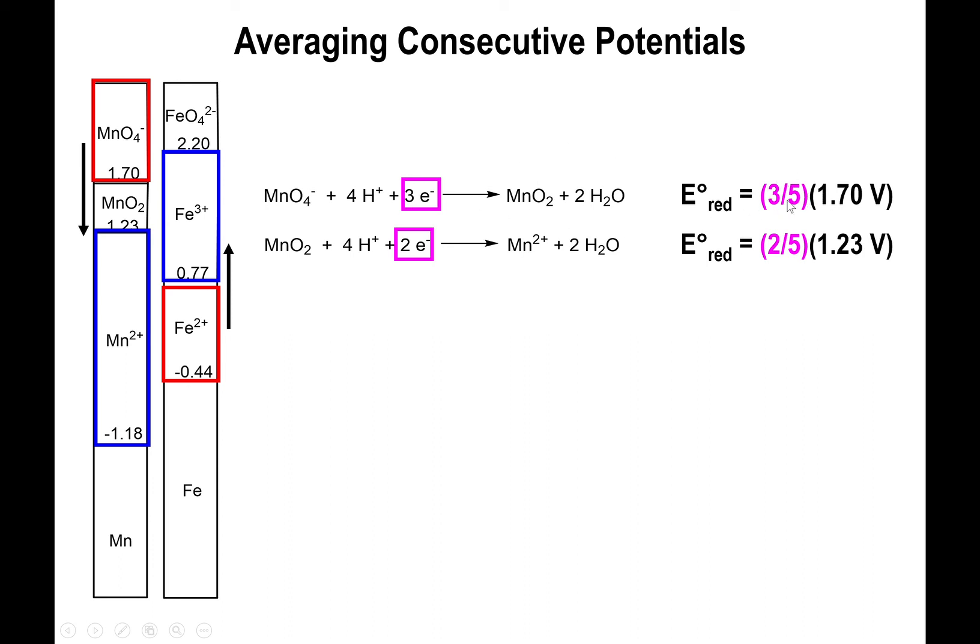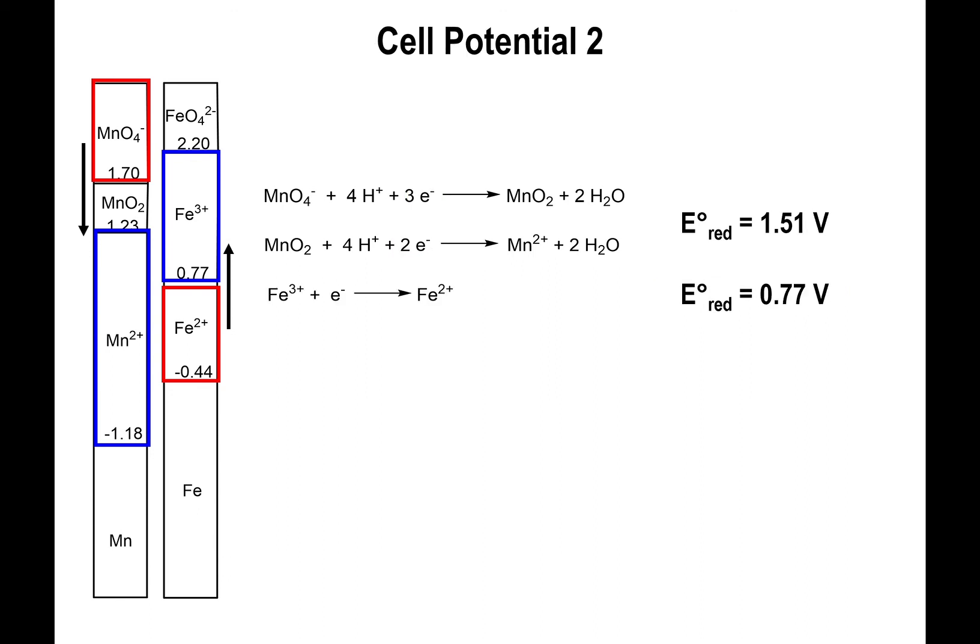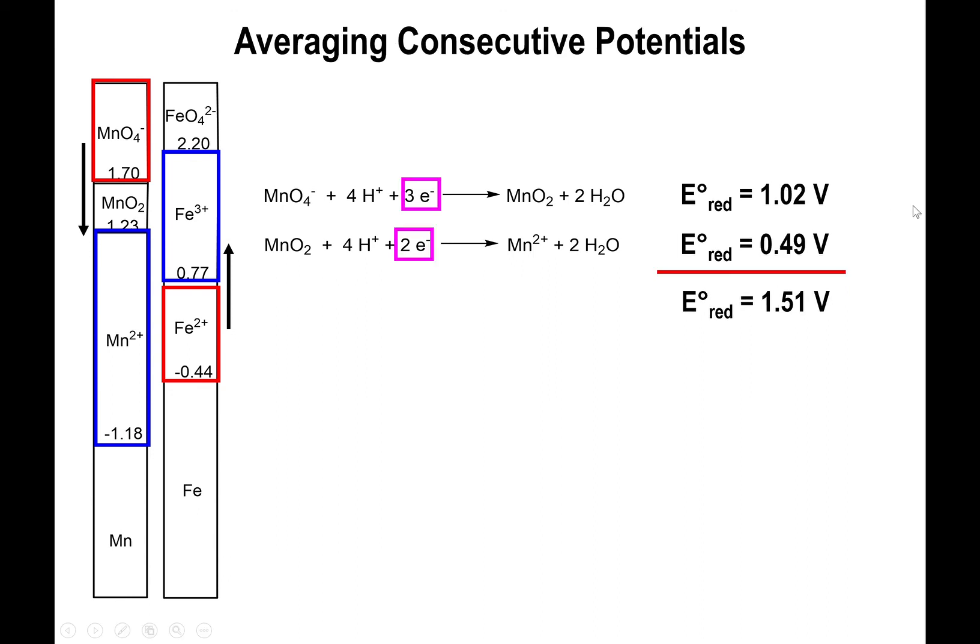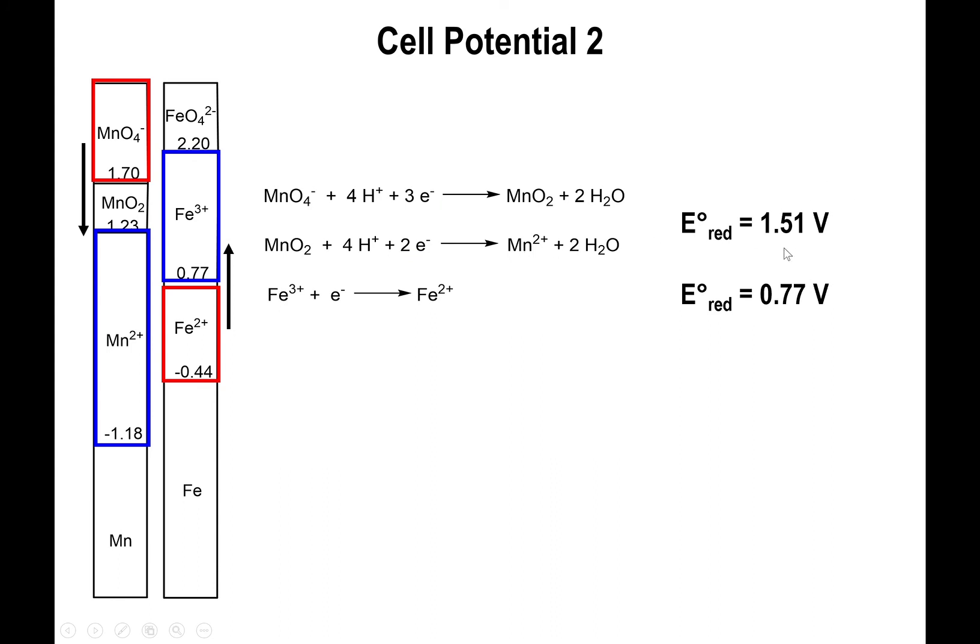So for the first one, we multiply the potential by three-fifths. For the second one, which only has two electrons, we multiply the potential by two-fifths. And this basically kind of calibrates the potential per electron. And so what happens here is that you have new values for the potentials. But once you do that calibration, you could actually add them together to give you the overall process. So you're now dealing with 1.51 volts for the reduction of permanganate going directly to manganese 2+. And so you could use that as your reduction value.